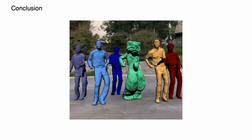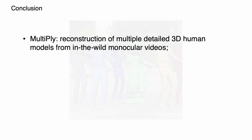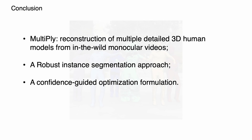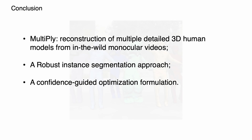In this paper, we present Multiply, a novel framework to reconstruct multiple people in 3D from in-the-wild monocular videos. A robust instance segmentation approach that achieves a clean separation between people even under close interaction. And a confidence-guided optimization formulation leading to temporally and spatially coherent 3D human reconstructions with high fidelity.